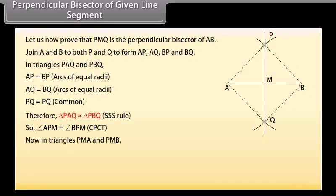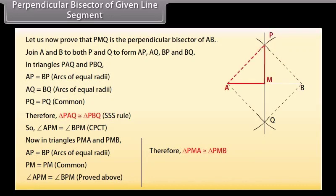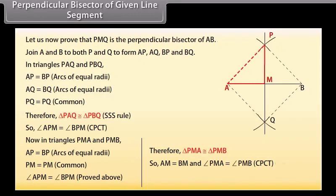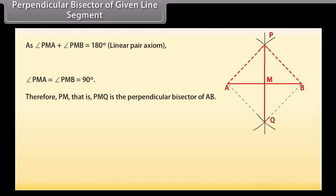Now in triangles PMA and PMB: AP is equal to BP, arcs of equal radii; PM is equal to PM, common; angle APM is equal to angle BPM, as proved above. Therefore, by SAS congruence rule, triangle PMA is congruent to triangle PMB. So AM is equal to BM, and angle PMA is equal to angle PMB by CPCT. Now by using the linear pair axiom, angle PMA plus angle PMB is equal to 180 degrees. Therefore angle PMA equals angle PMB equals 90 degrees. Hence PMQ is the perpendicular bisector of AB.